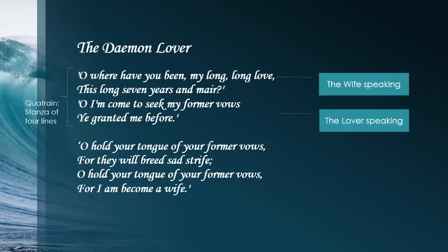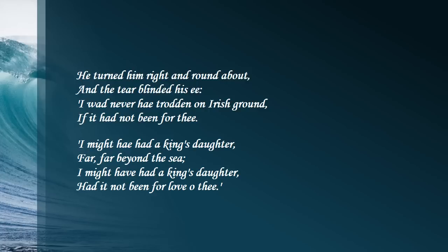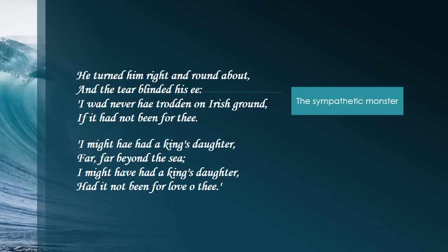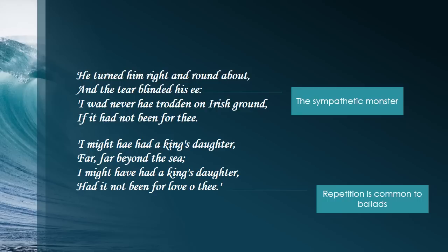Just knowing from the title, we can predict that a demon lover is not going to be an ordinary lover. He had vowed something, it's been seven years, and she's kind of given up on him. He says, 'I would never have trodden on Irish ground if it had not been for thee. I might have had a king's daughter far, far beyond the sea.' We see this tragic theme, this sad heartbreak — sort of the sympathetic monster. And we notice a lot of repetition common to ballads, such as 'had it not been for love of thee' repeating 'if it had not been for thee.'